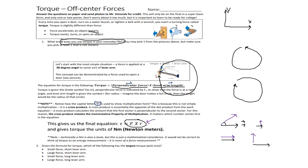One last thing to point out: the units. You have a force times a distance, so you get Newton-meters. Now you may remember from energy that a Newton-meter is also equal to a joule, but that is a mathematical coincidence. It would not be accurate to think of a Newton-meter in the torque sense as an energy measurement — torque is definitely a force-type measurement, just a force that goes in circles.